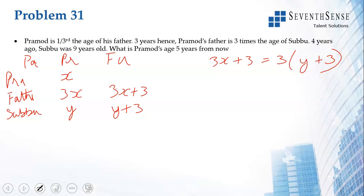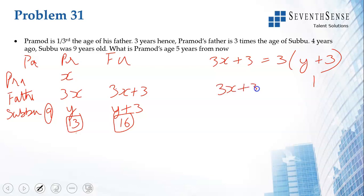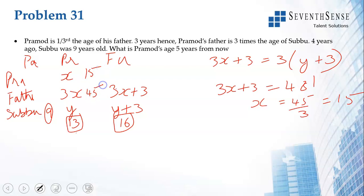Four years ago, Subhu was 9 years old, so presently Subhu is 13, and three years hence he will be 16. Substituting y + 3 = 16 into the equation: 3x + 3 = 3 × 16 = 48, so 3x = 45, x = 15. Presently Pramodh is 15 and father is 45. Five years from now father will be 50.